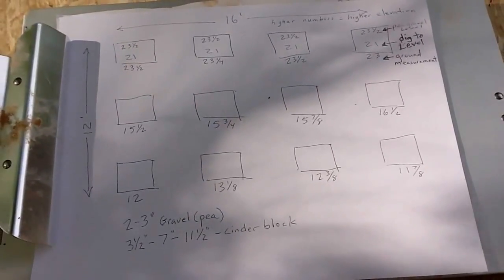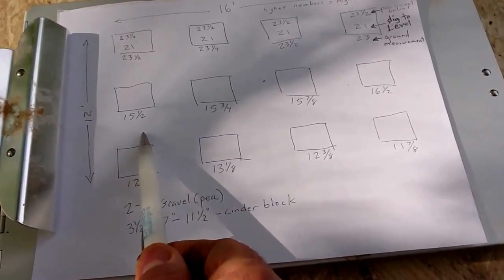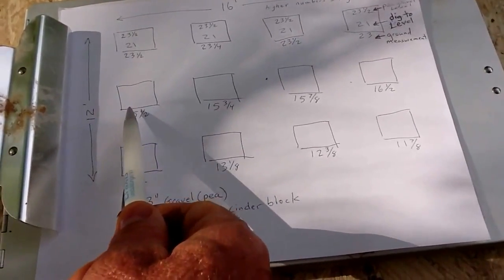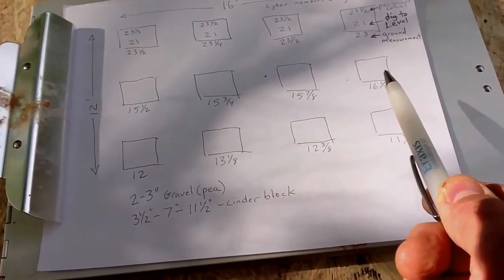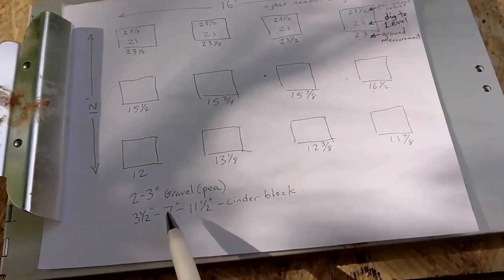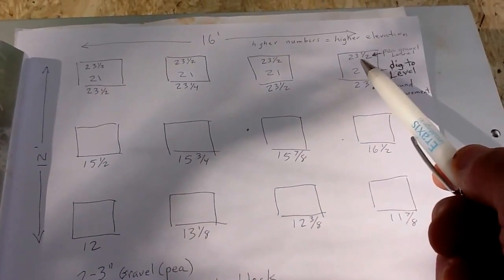For the next level, our ground measurements showed we dug down two and a half inches, so this was like 13 inches, 13 and a half. Then we added a seven inch block to bring that level up to 23 and a half.